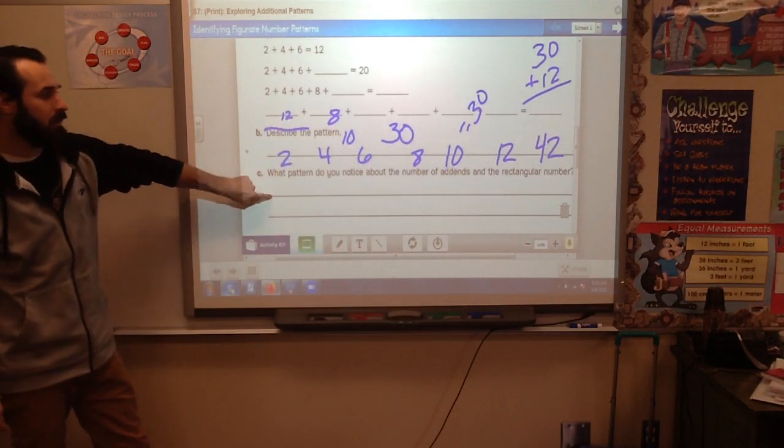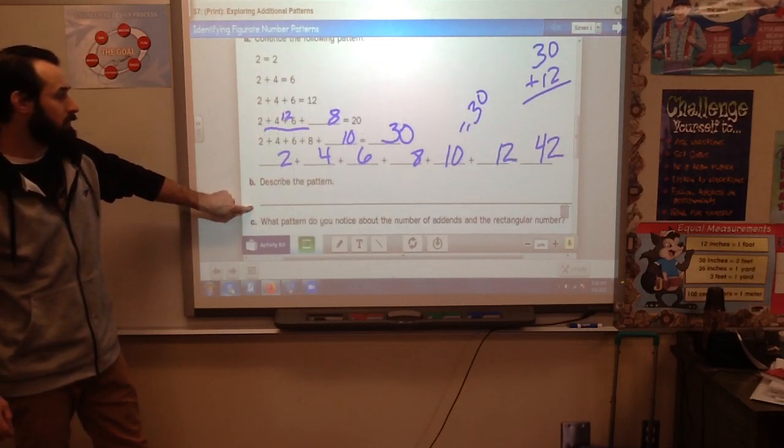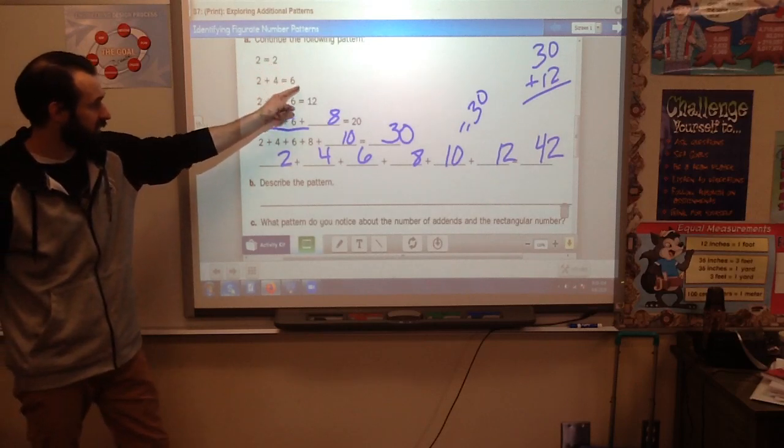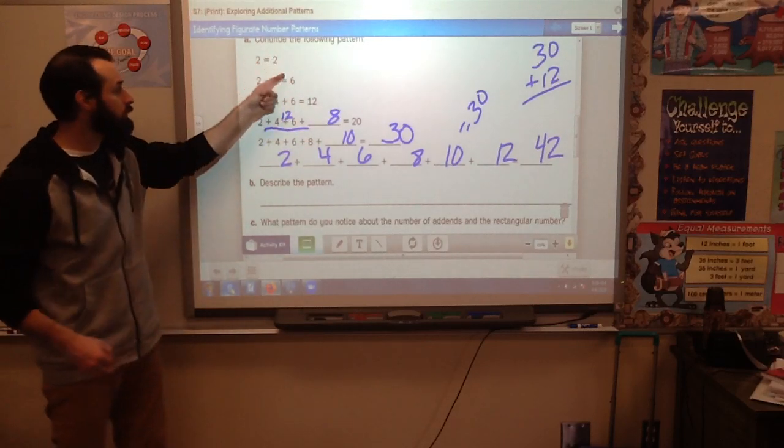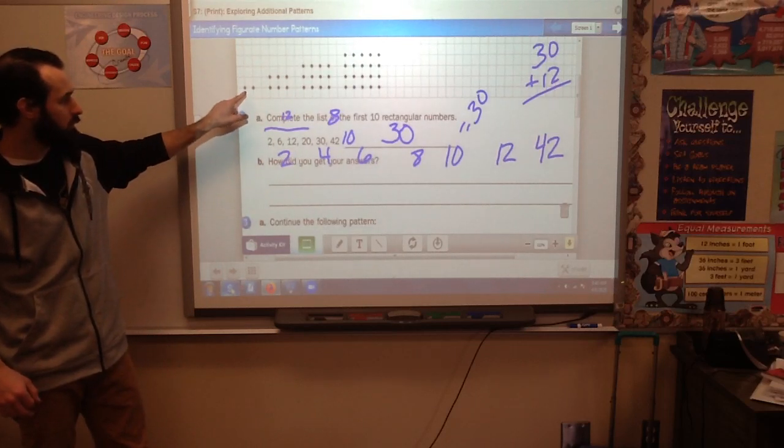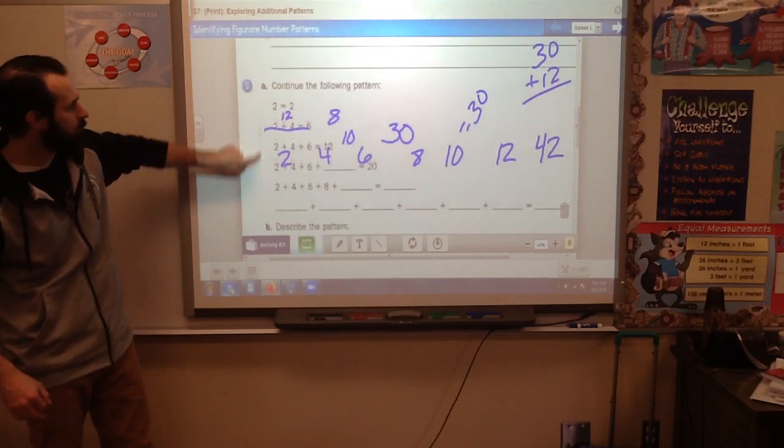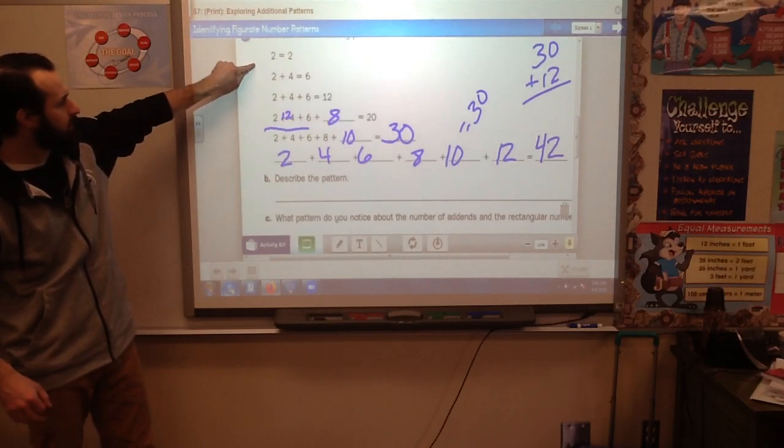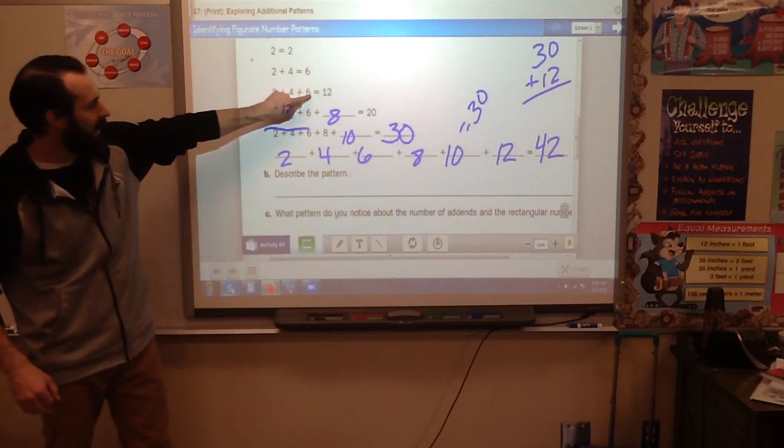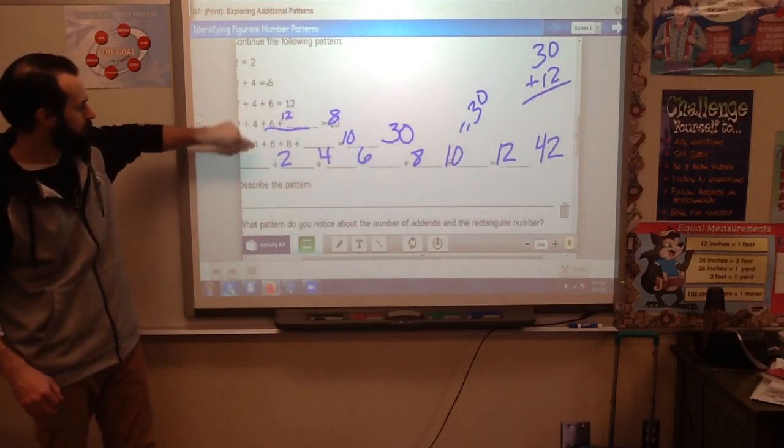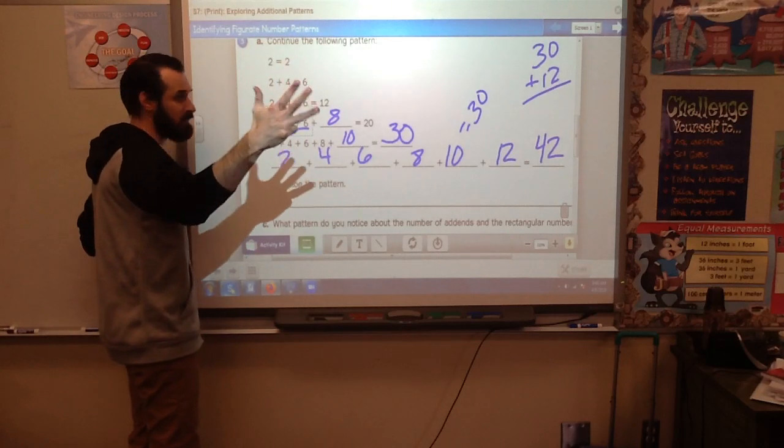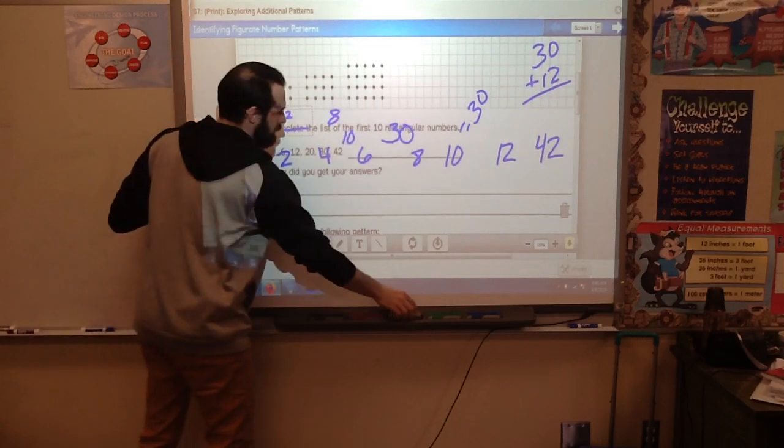C says, what do you notice about the number of addends and the rectangular number? When we have 1 addend, we just have 1 addend and get the first even number. For the second rectangular number, we have 2 addends and get 6. When we have 3 addends, we get the third rectangular number. When we have 4 addends, 2, 4, 6, 8, that's 4 addends, we get the fourth rectangular number.